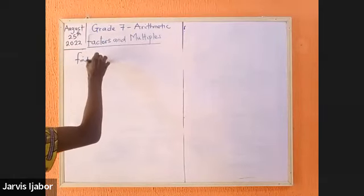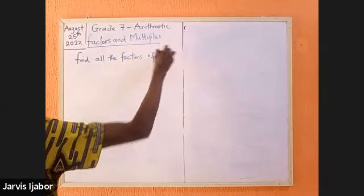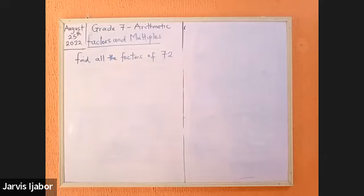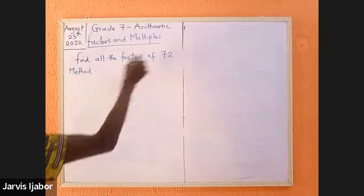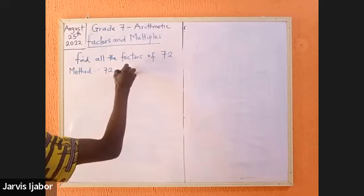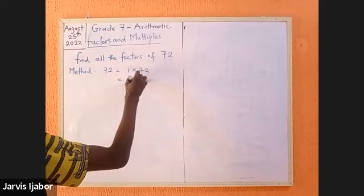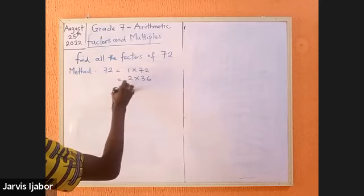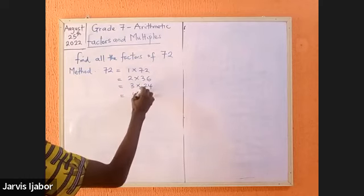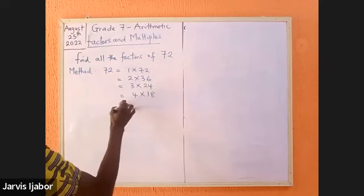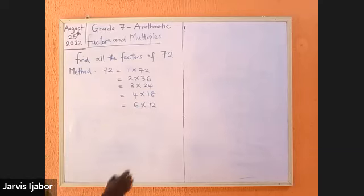So I'll just say find all the factors of 72. We said there are three methods we can use. Method one: I simply will write the multiples out. 72 equals 72 times 1 or 1 times 72, and 2 times 36, 3 times 24, 4 times 18, 6 times 12.